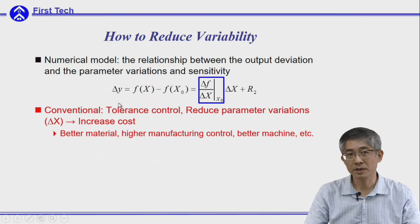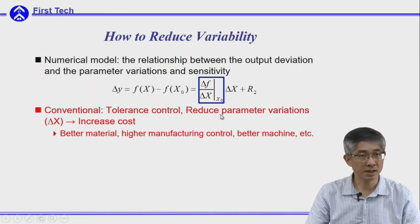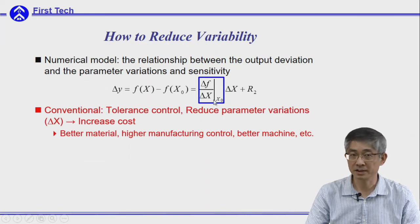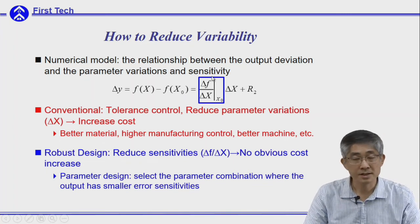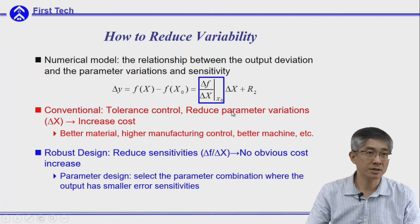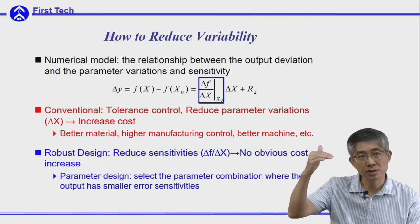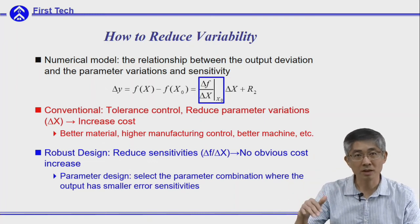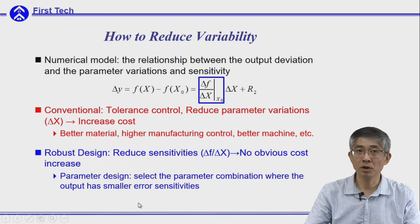But when you look carefully at Δy, it is a function of two parts: the first derivative (or sensitivity of output y with respect to variation of x) and Δx. So robust design tries to reduce the sensitivity term. How do we reduce the sensitivity terms? Since the system is non-linear, we can find a place where the slope of the function is smaller, which means the parameters will be insensitive to the error of x.